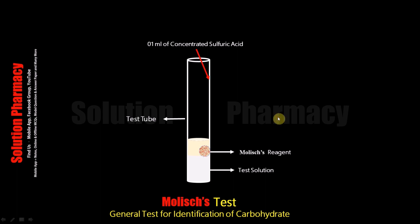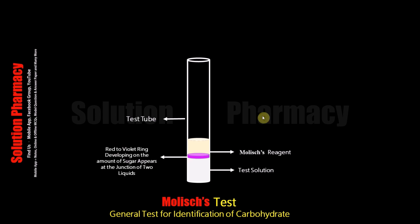After adding sulfuric acid, you can observe a red to violet ring at the junction of the 2 liquids — it means carbohydrate is present in the test solution. If no violet or purple color ring forms at the junction of the 2 liquids, it means carbohydrate is absent in our sample. This is how we detect the presence of carbohydrate by performing the Molisch test.